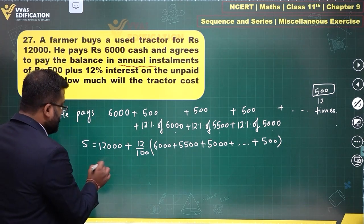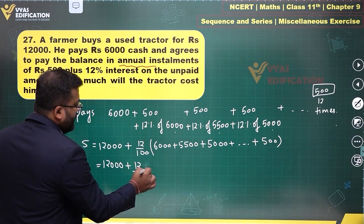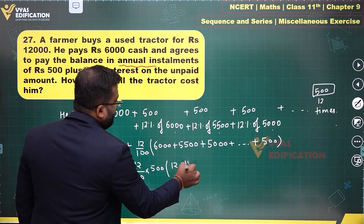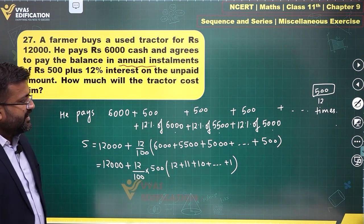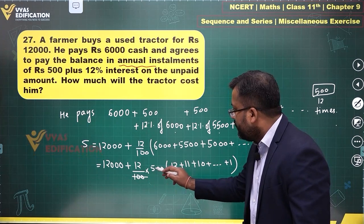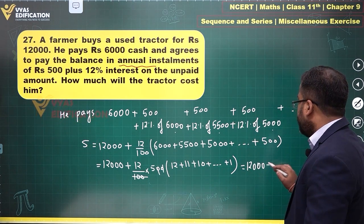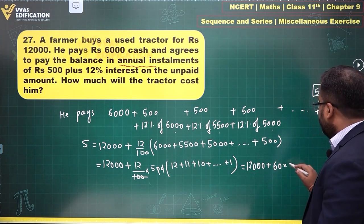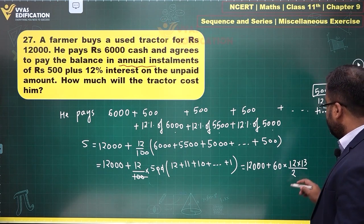So we have 12,000 plus (12/100) times the sum of 500 common factor: what remains is 12 plus 11 plus 10, down to 1. This is the sum of natural numbers, which is easy to handle. Taking out the 100 and simplifying, this becomes 12,000 plus 60 times the sum of the first 12 natural numbers, which is 12 × 13 / 2.